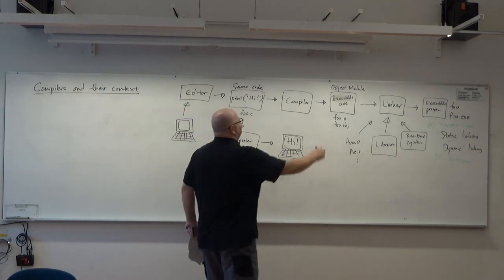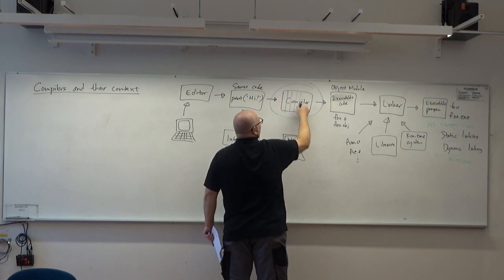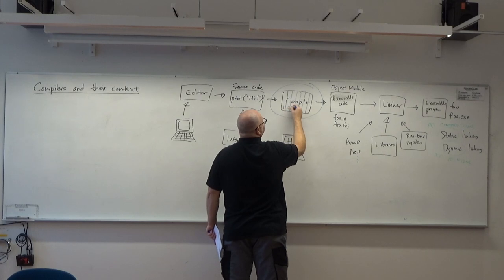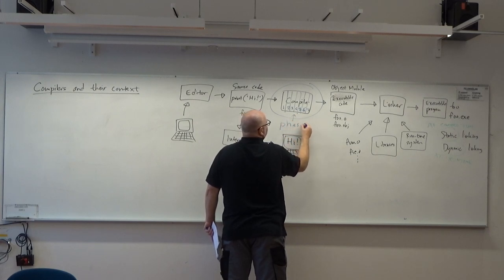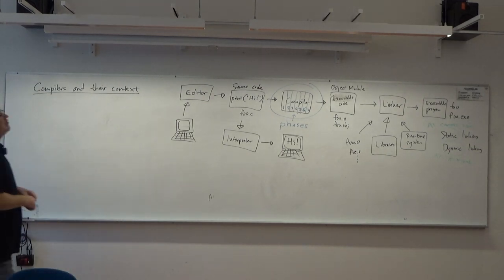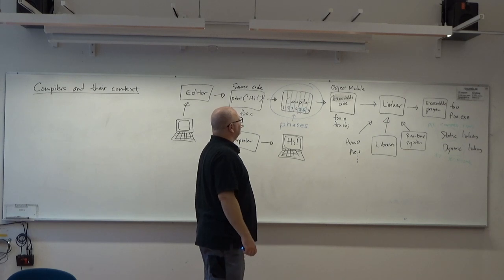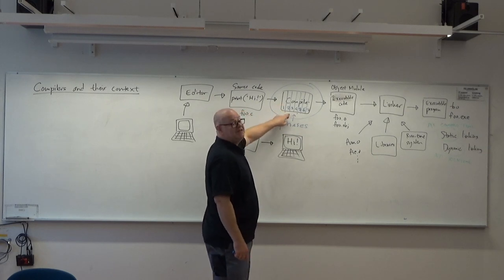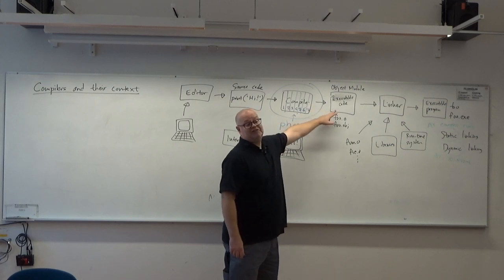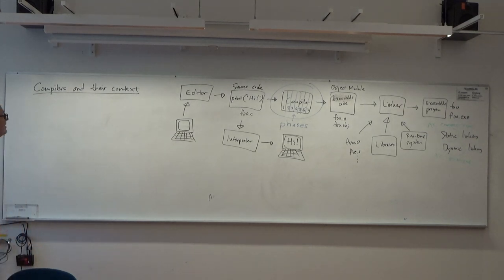Let's now look inside the compiler and see that it actually consists of seven phases. The source code is sent to the first phase, which translates it into another format fed to the next phase, and so on, until in the final phase you get the executable code. Let's look at these seven phases of the compiler.